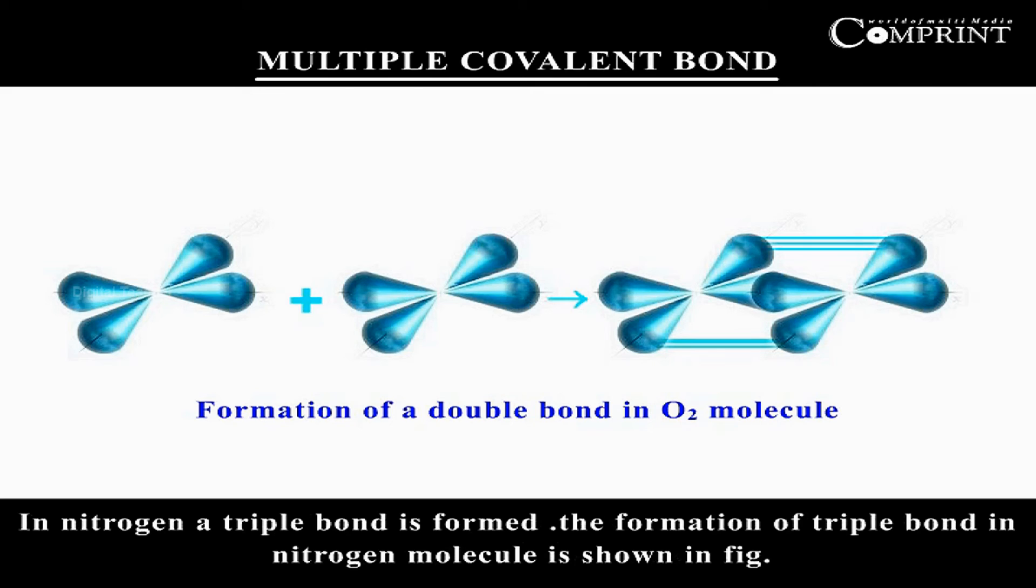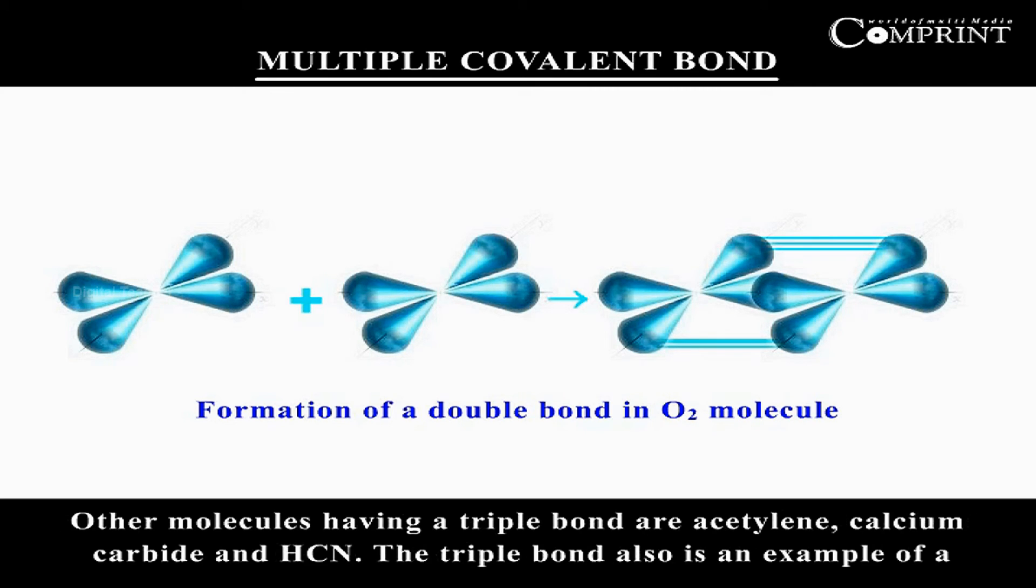The formation of triple bond in nitrogen molecule is shown in the figure. Other molecules having triple bond are acetylene, calcium carbide, and HCN. The triple bond also is an example of a multiple covalent bond.